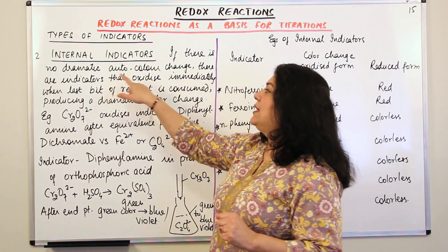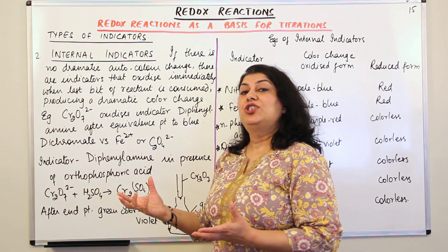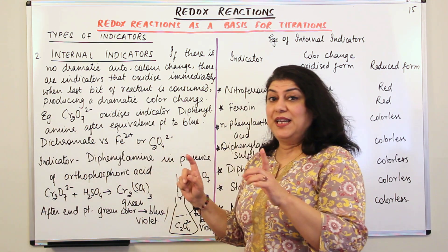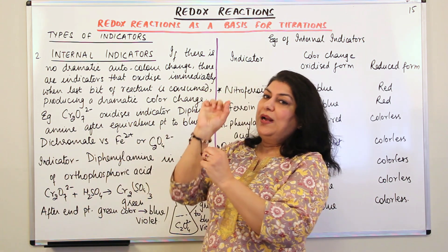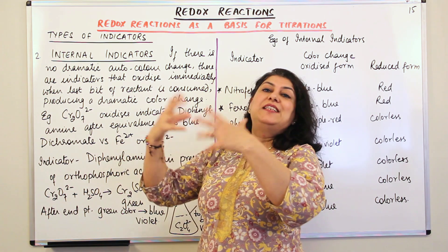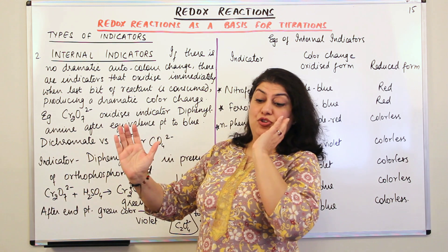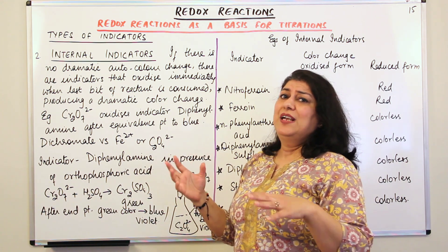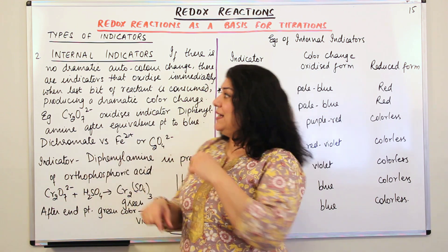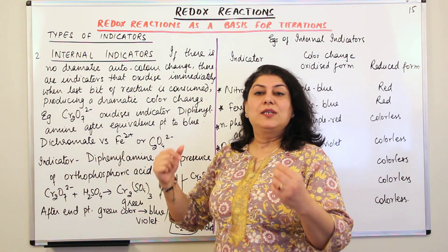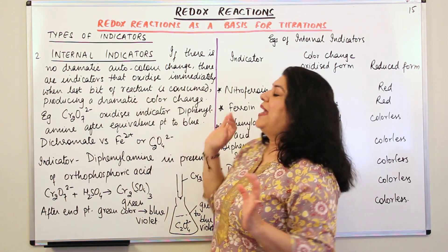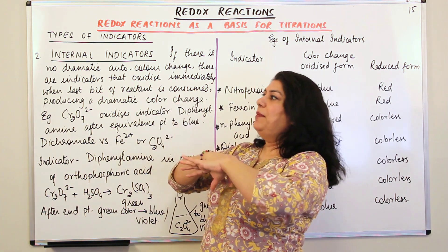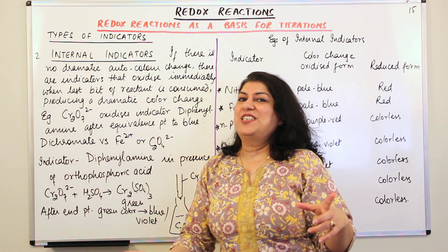If there is no dramatic auto color change — 'auto' meaning self — as occurred with potassium permanganate, where one drop of excess KMnO₄ caused the entire mixture to turn colored, then we use internal indicators. These are indicators that oxidize immediately when the last bit of reactant has been consumed. When the last bit of reactant is consumed, the indicator reacts with the oxidant, gets oxidized, and changes its color.